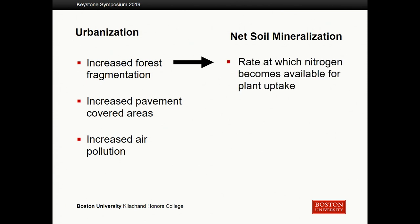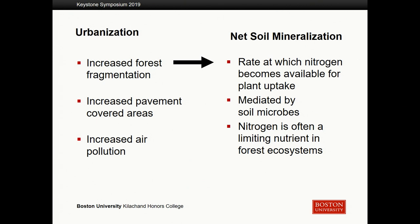Net soil mineralization is the rate at which nitrogen becomes available for plant uptake. When a leaf falls from a tree and lands on the ground, that leaf is full of nitrogen, but it's in a form that trees can't actually take up. It has to first be broken down by microbes into a form available for plant uptake. Nitrogen is often a limiting nutrient in ecosystems — the amount of nitrogen limits how quickly and how much forest can grow. In fact, the predominant ingredient in garden fertilizer is nitrogen, so nitrogen is really important for overall ecosystem functioning.